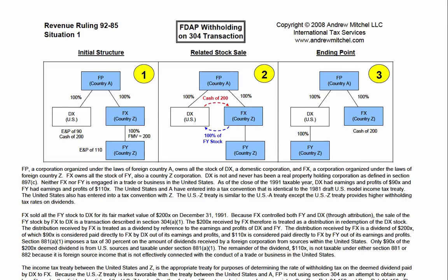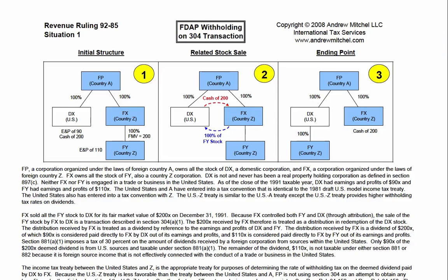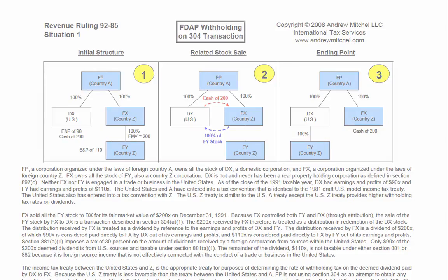The U.S. generally imposes a 30% dividend withholding tax on dividends paid by U.S. corporations to foreign persons. Thus, the 90 of dividend paid out of DX's earnings was subject to the 30% dividend withholding tax. The 30% rate may be reduced under an income tax treaty, if applicable.